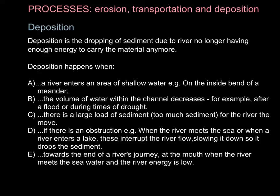The final process is deposition — the dropping of sediment due to the river no longer having enough energy to carry the material. This happens when a river enters an area of shallow water, for example the inside bend of a meander, which forms a slip-off slope. It can also occur when the volume of water decreases — such as after a flood when water dissipates, or during drought when the water level is really low. It can happen when there's a large sediment load so the river is overloaded, when there's an obstruction such as the river meeting the sea or entering a lake, slowing the flow, or at the river mouth when the river meets the sea and energy is low.